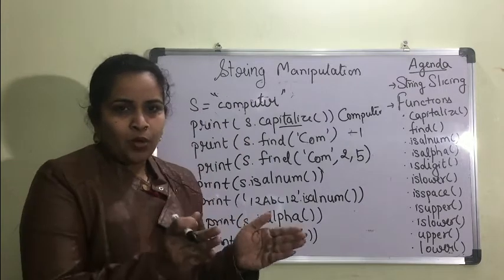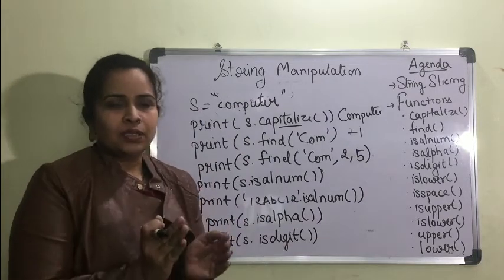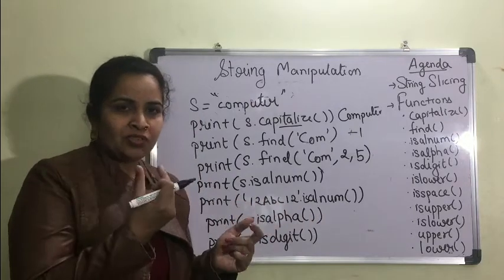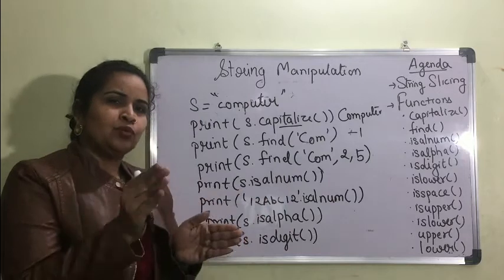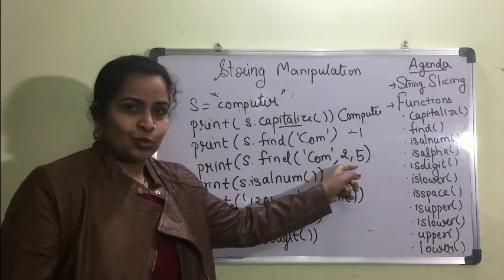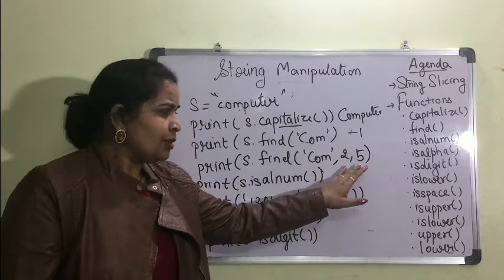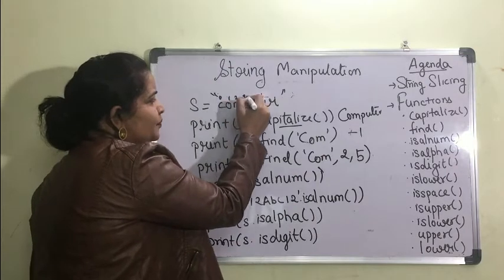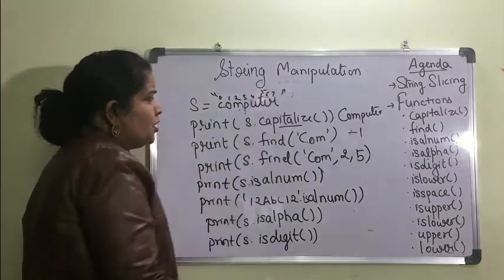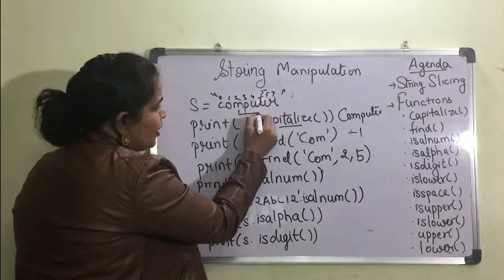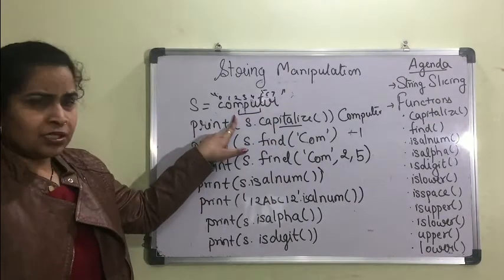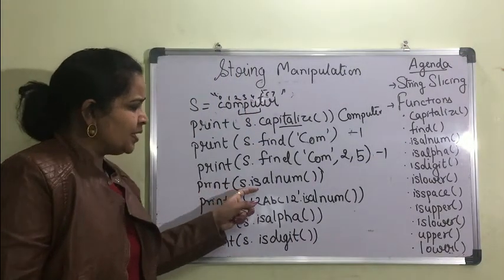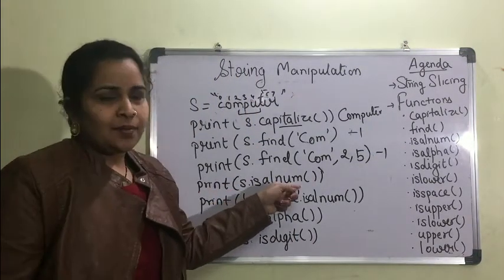We can add another argument to find(): a starting index and an ending index — the bounds within which to search the substring. For example, if the string has length 20 and I want to find a substring only between index 2 and 5, I write s.find('com', 2, 5). Both upper and lower limits are inclusive, so if 'com' is not found there, it will print -1.